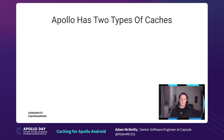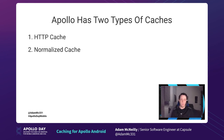The Apollo library has two types of caches ready to go for us to implement. The first one is an HTTP cache, and the second one is a normalized cache. We'll talk about the differences between them.